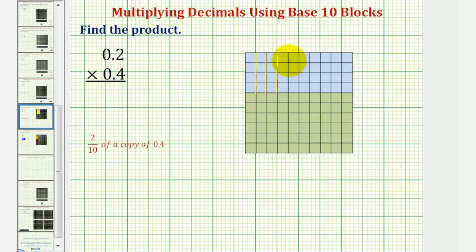Again, here are the 10 equal partitions of 4 tenths. Because we want 2 tenths of 4 tenths, we would shade two of these 10 partitions.